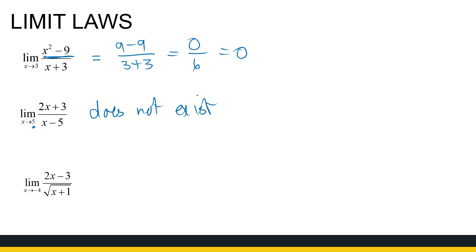Let's look at the last example: the limit as x approaches minus 4 of this function. What you need to notice is that minus 4 isn't even in the domain of this function — if x is minus 4, we'd be taking the root of a negative number, which doesn't happen. So the function is not defined at minus 4, and the limit does not exist. In the next video, we're going to look at using the limit laws on some more examples.